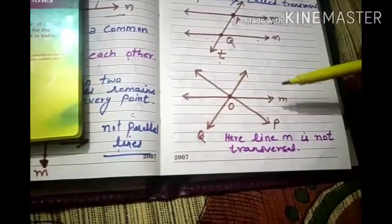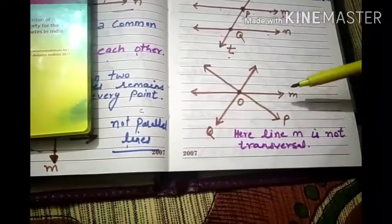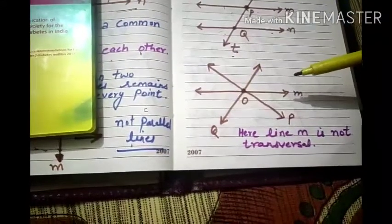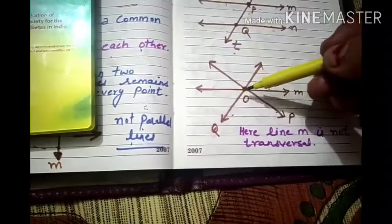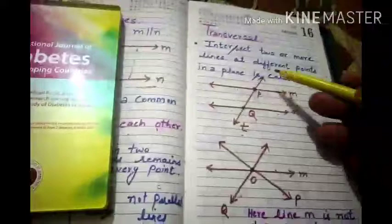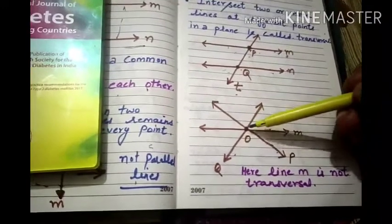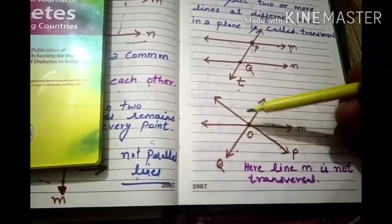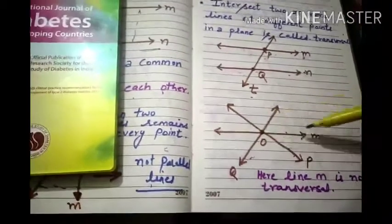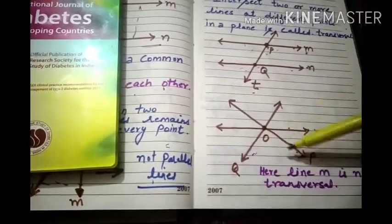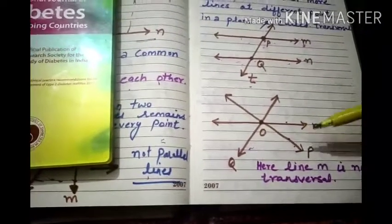Here I have drawn another figure. There is line P, line Q, and line M. If I ask whether line M can be a transversal — no, it is not a transversal line, because line M intersects lines P and Q at the same point. The feature of a transversal is that it must intersect at different points, not the same point. These three lines are called concurrent lines, because more than two lines are intersecting at one point.